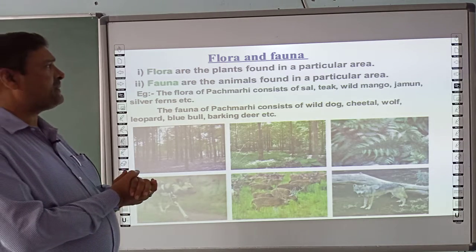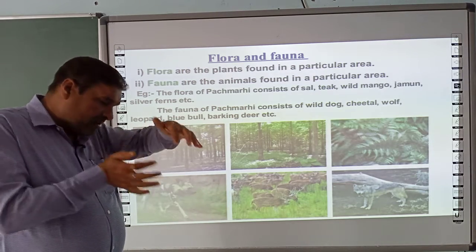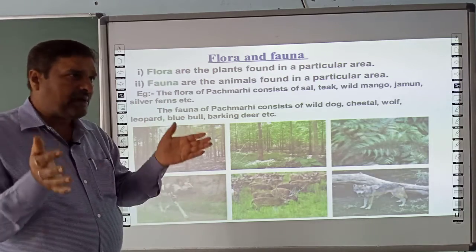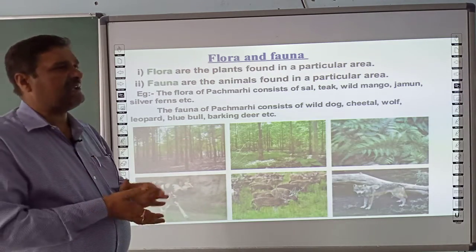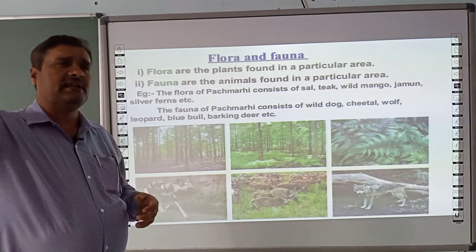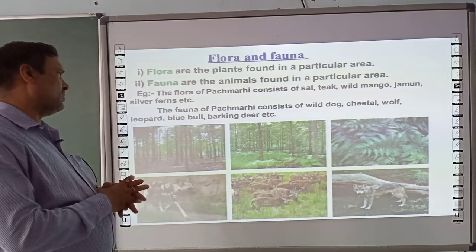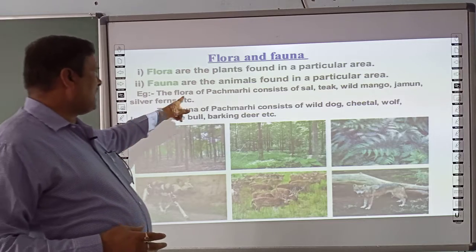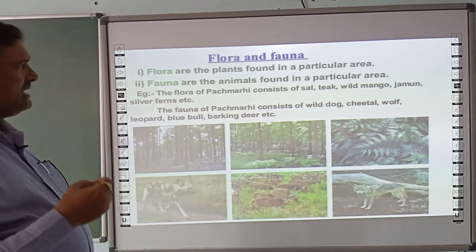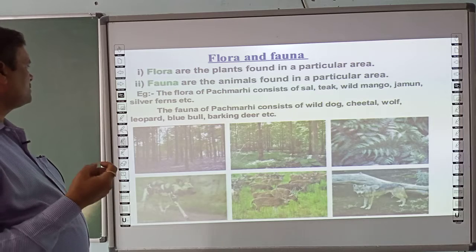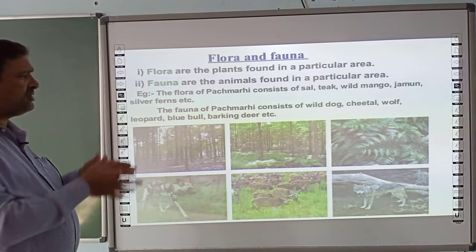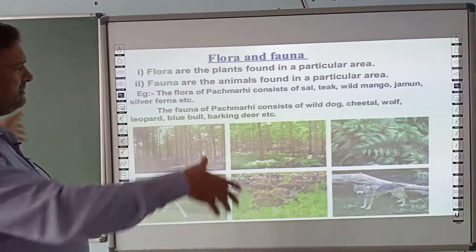Fauna are the animals found in a particular area. If we go to a particular area, we see some animals in our area but in other areas we don't get them. Flora consists of plants like sal, tea, wild mango, jamun, silver ferns — these are plants found in a particular area.